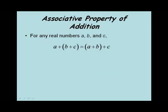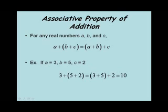Now let's look at the associative property of addition. This says for any real numbers a, b, and c, a plus (b plus c) equals (a plus b) plus c. When adding strings of numbers together, it doesn't matter which numbers we add first. In the example with a equal 3, b equal 5, c equal 2: 3 plus (5 plus 2) is 3 plus 7, which is 10; and (3 plus 5) plus 2 is 8 plus 2, which is also 10. Regardless of which two numbers we add first, the answer comes out the same.